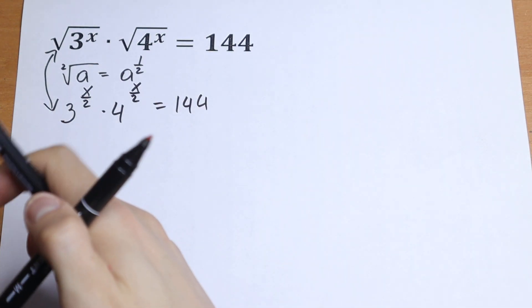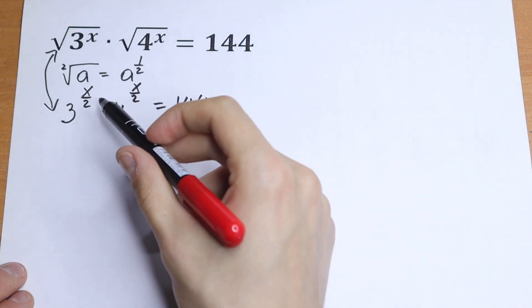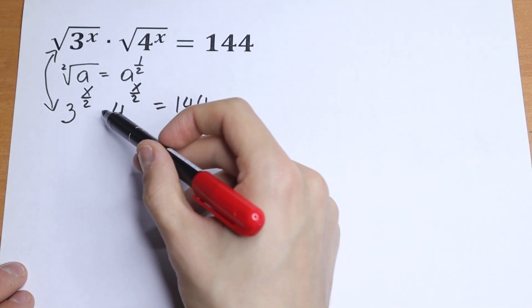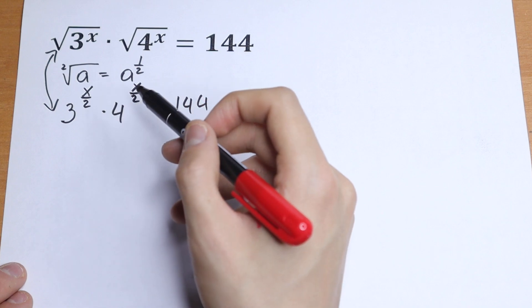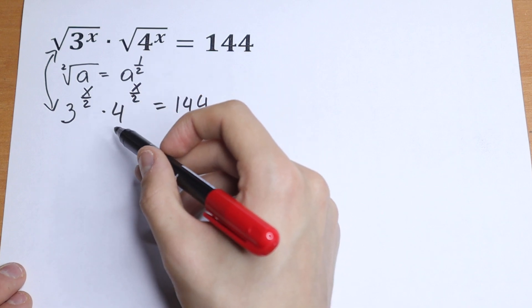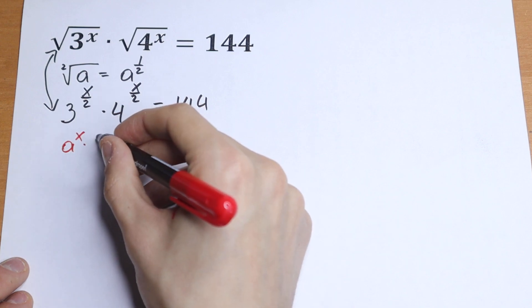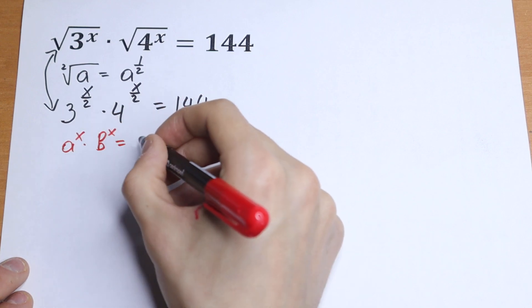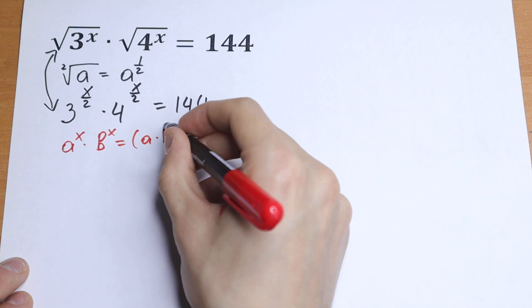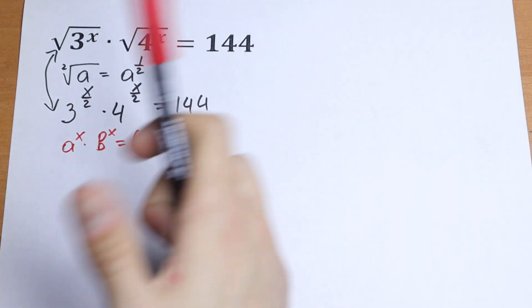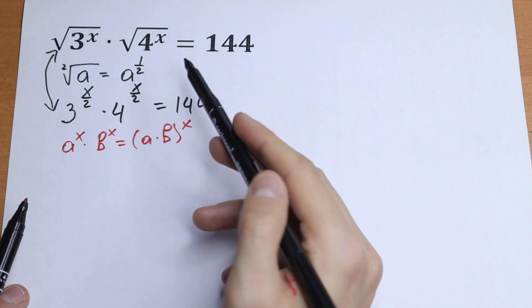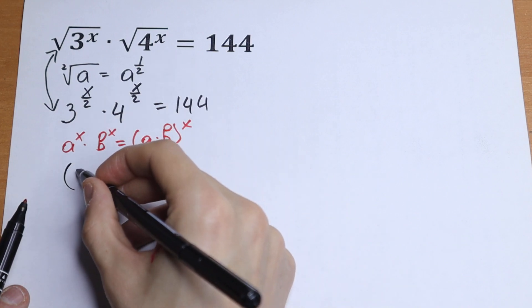The next rule we need right here is when we have the same exponent but different bases, and of course we need to have a multiplying sign, we can write it in one parenthesis. So if we have a to the power x times b to the power x, we can write it as a times b to the power x. So same exponents, different bases, we can write it in one parenthesis.